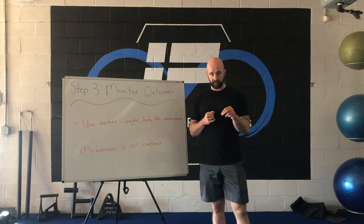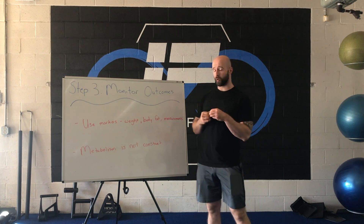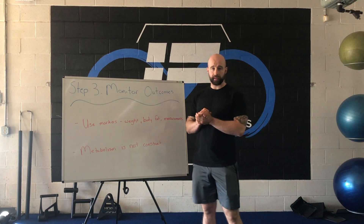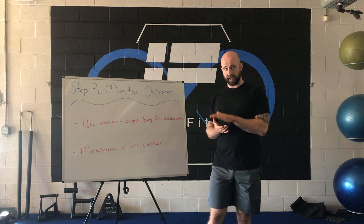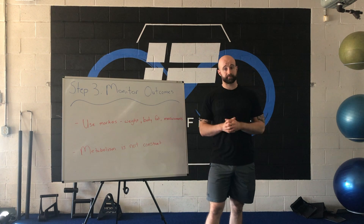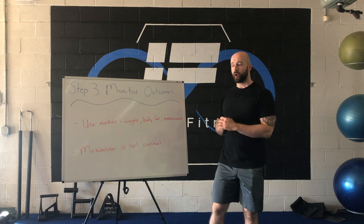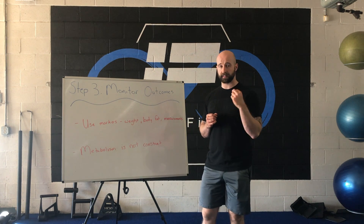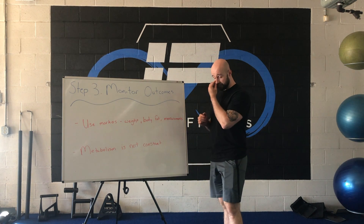Usually when I am reverse dieting someone, there are going to be weeks where the scale jumps — maybe a half a pound, maybe a full pound. Let's say I give someone a 5 percent increase in calories and the following week I see a one pound average weight gain. What I'm going to do the following week is not add any more calories — I'll keep them at that same level and see what happens. In most cases the scale weight will come back down. In either case, my next increase in calories would probably be closer to 3 percent instead of 5 percent, especially if the person was concerned with not increasing body fat.